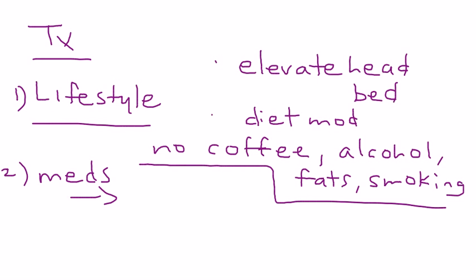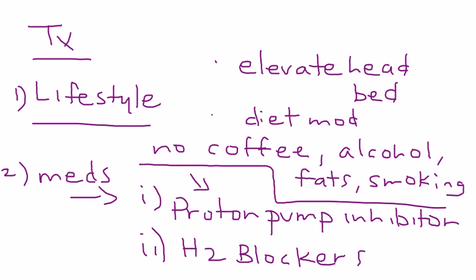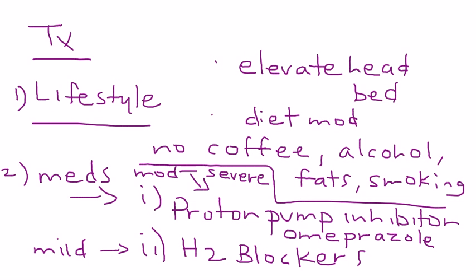If lifestyle changes have been tried and are still not effective, you can move to medications. There are two main types: proton pump inhibitors (PPIs) and H2 blockers. H2 blockers are generally for mild GERD, while PPIs are for moderate to severe GERD. A common PPI is omeprazole, and a common H2 blocker is ranitidine. Each has brand names as well.